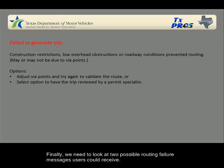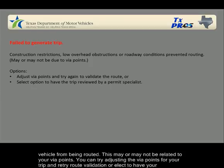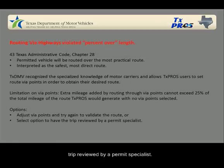Finally, we need to look at two possible routing failure messages users could receive. First is 'Failed to generate trip.' This simply means that there are construction restrictions, low overhead obstructions, or roadway conditions that prevented the vehicle from being routed. This may or may not be related to your via points. You can try adjusting the via points for your trip and retry route validation, or elect to have your trip reviewed by a permit specialist.